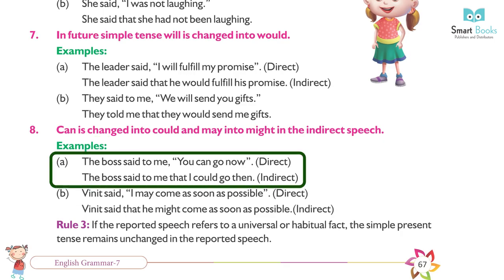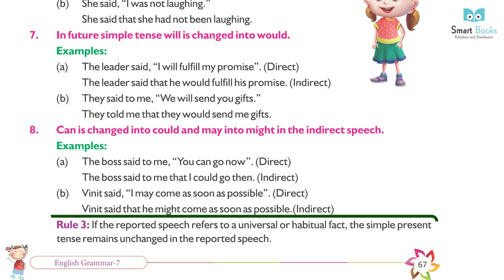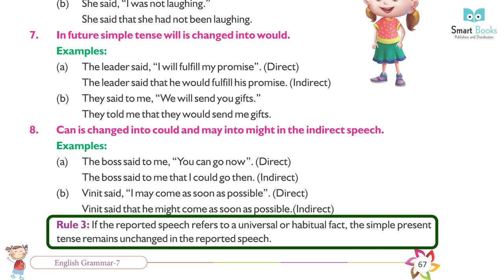(8) 'Can' changes to 'could' and 'may' changes to 'might' in indirect speech. Examples: (a) The boss said to me, 'You can go now.' (Direct) → The boss told me that I could go then. (Indirect) (b) He said, 'I may come as soon as possible.' (Direct) → He said that he might come as soon as possible. (Indirect) Rule 3: If the reported speech refers to a universal or habitual fact, the simple present tense remains unchanged.